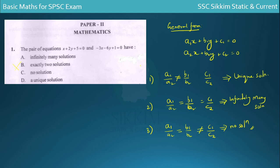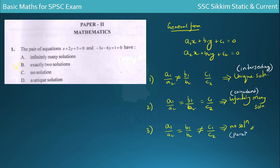So this is the graph interpretation. In the unique solution, the two lines intersect in the Cartesian plane. For infinitely many solutions, the two lines are coincident. For no solution, the graph is parallel — the two lines are parallel. To summarize: parallel = no solution; coincident = infinitely many solutions; intersecting = unique solution.